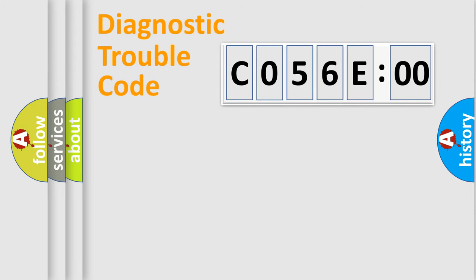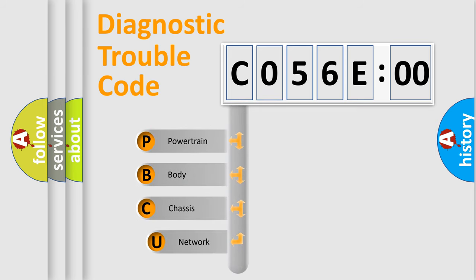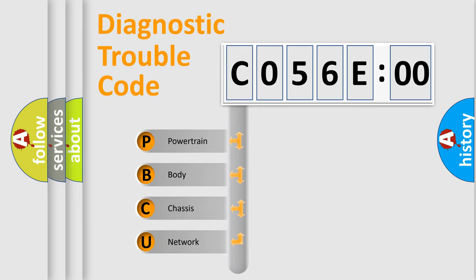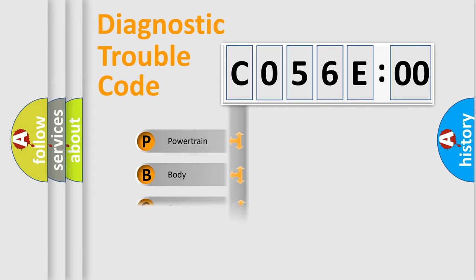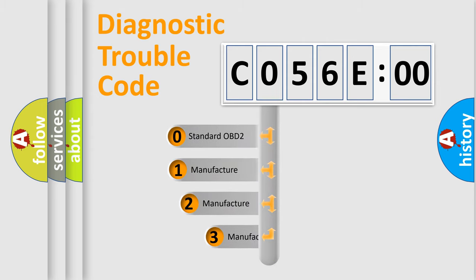First, let's look at the history of diagnostic fault code composition according to the OBD2 protocol, which is unified for all automakers since 2000. We divide the electrical system of an automobile into four basic units: Powertrain, Body, Chassis, and Network. This distribution is defined in the first character of the code.